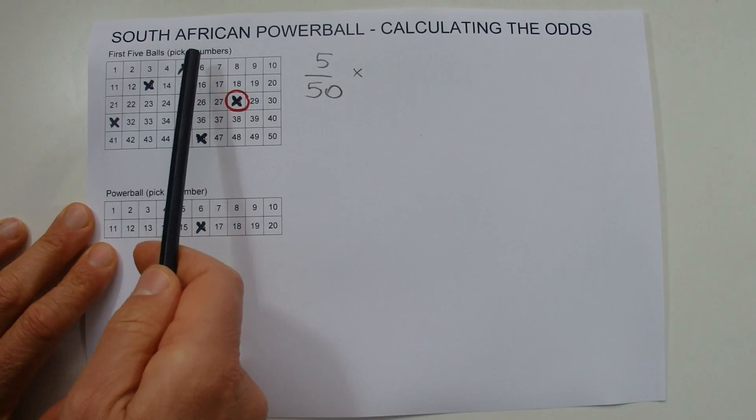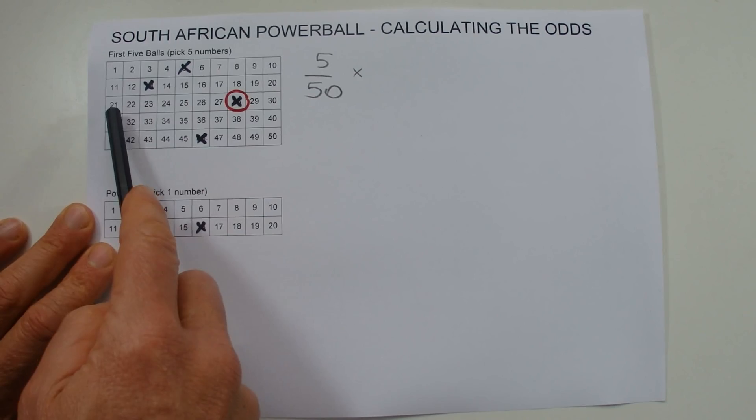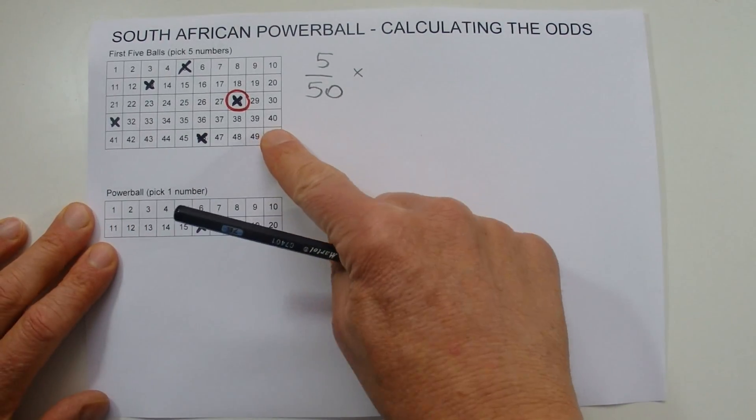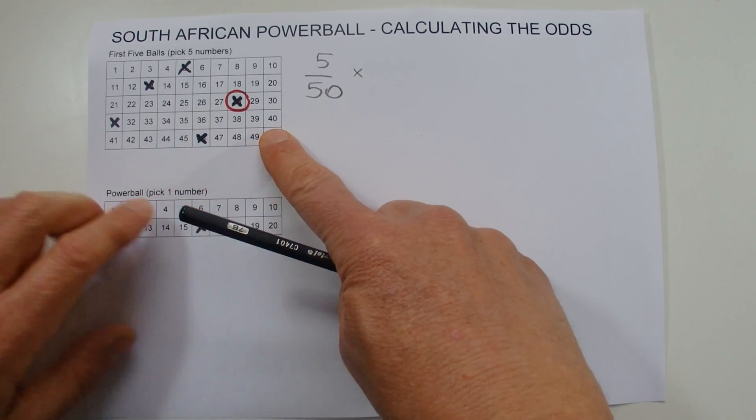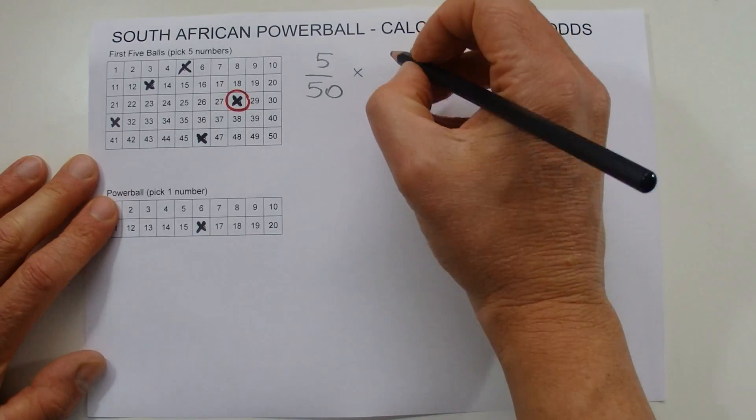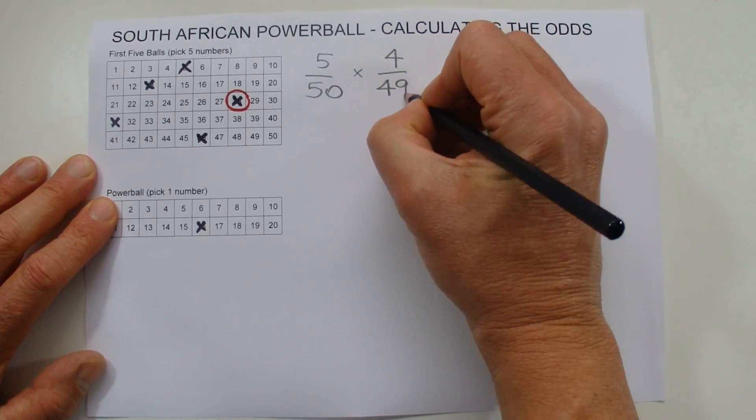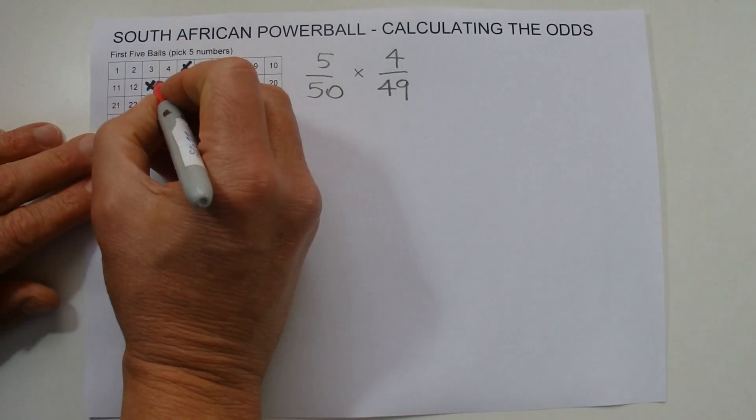When the next number's drawn, you're left with four remaining numbers on your coupon, but now there's only 49 numbers in the barrel because one's already been drawn. So you've got four chances in 49 of matching the second number that's drawn.